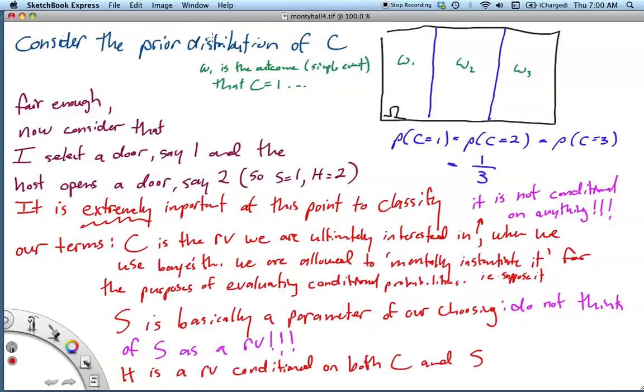So let's get started. We want to consider first the prior distribution of C. So just to put in like sample space sort of format here, we can let this be our sample space and we can let omega 1 be the outcome of the simple event that C is equal to 1. Some people aren't going to like that, but basically omega 1 is that C equals 1, omega 2 is that C equals 2, and these basically partition the sample space and are equal probable. So we can talk about now our events.